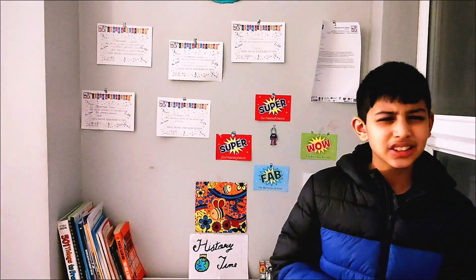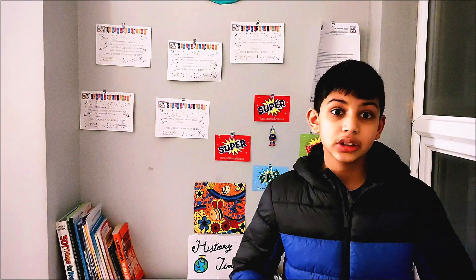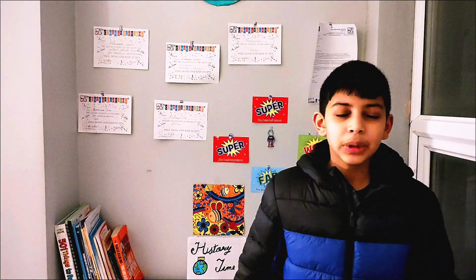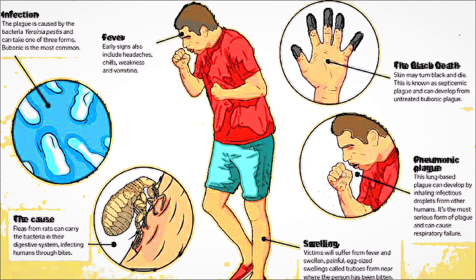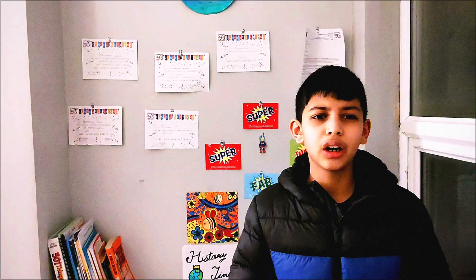The septicemic plague is the deadliest — it focuses on your blood, and all the germs from the plague go into your bloodstream. This plague was so deadly that it killed almost more than half the population of Britain at the time. People in Britain had no highly educated doctors like we have nowadays, and they thought this plague came from bad air — the official word for this being miasma.